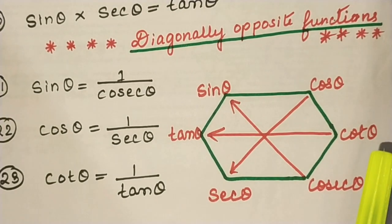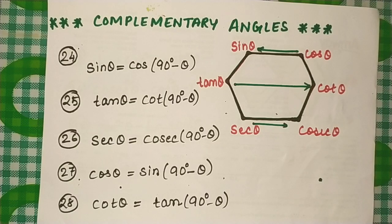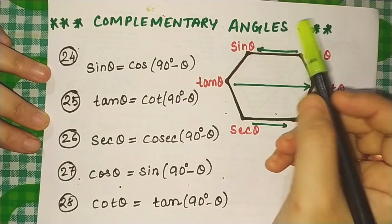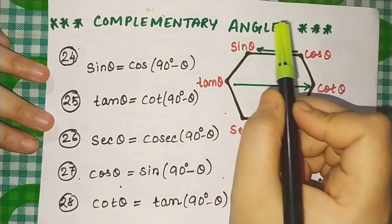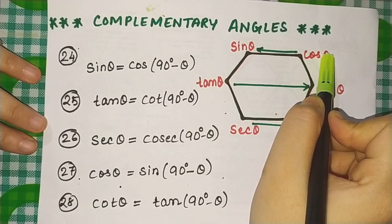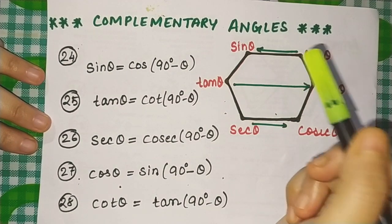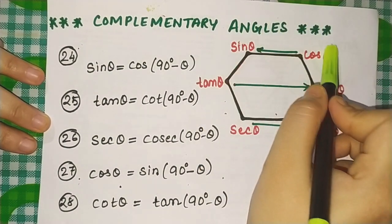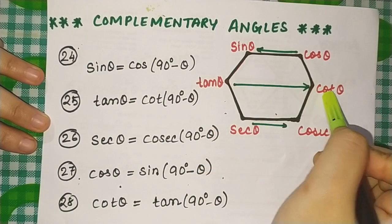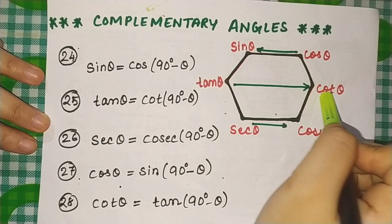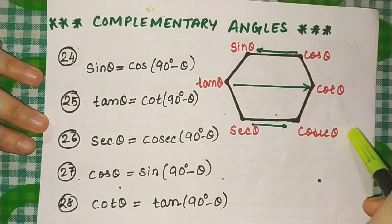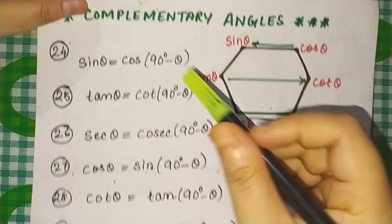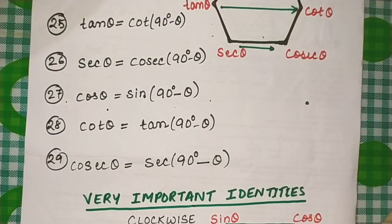Now this is about complementary angles. Complementary angles means when the sum of two angles is 90°. Sine and cos: sin θ = cos(90° − θ), or sin(90° − θ) = cos θ. Similarly, tan θ = cot(90° − θ) and cot θ = tan(90° − θ). Then sec θ = cosec(90° − θ) and cosec θ = sec(90° − θ). Here you will get six more formulae.